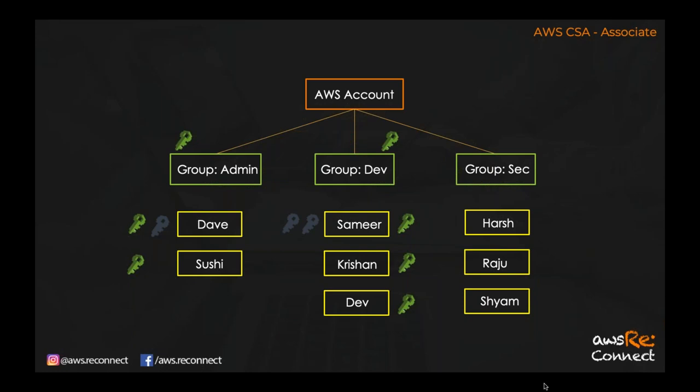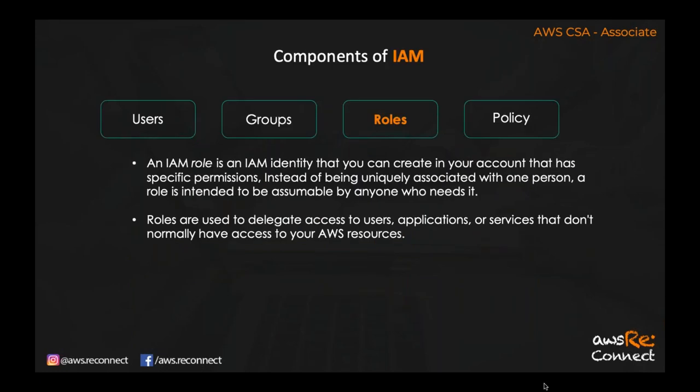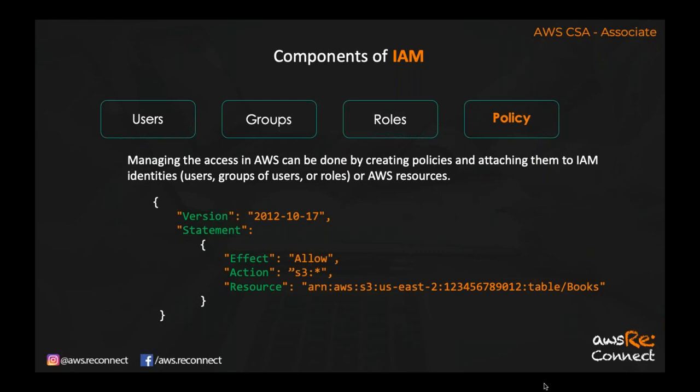The third IAM component is role. An IAM role is an IAM entity you can create in your account that has specific permissions. Roles are used to delegate access to users, applications, and services. For AWS services — like EC2 wanting access to S3 — you create a role between them. You don't need to hardcode credentials in your application to communicate. Just attach a role between two AWS services and they can interact. A role is an identity that provides authorization between two AWS services.